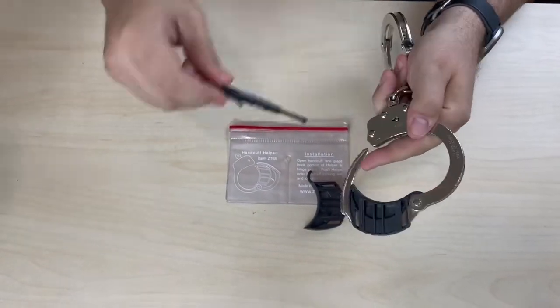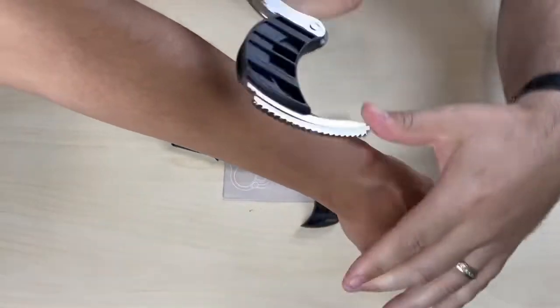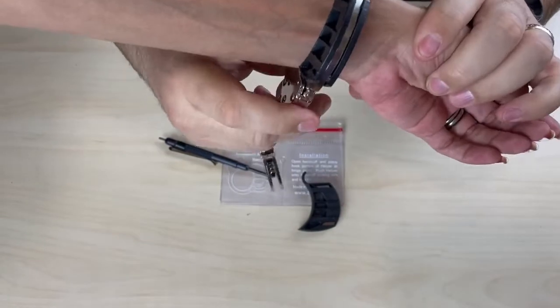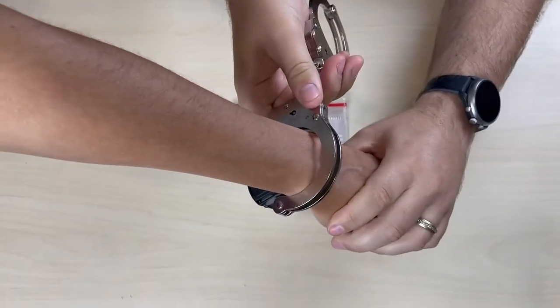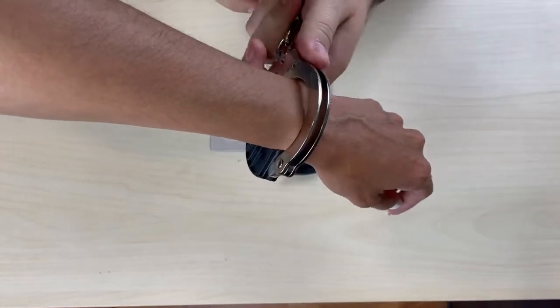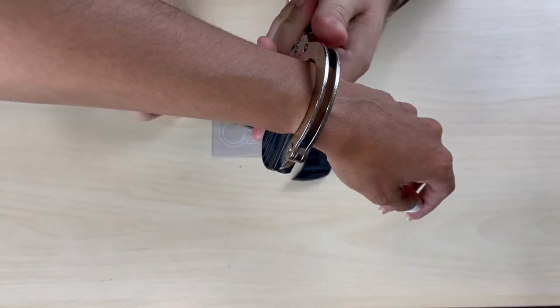So we're going to bring our assistant back in and we're going to apply it back to her wrist. And as you can see now, the space is greatly reduced and there is no space in between there, making it a lot easier to restrain the person.